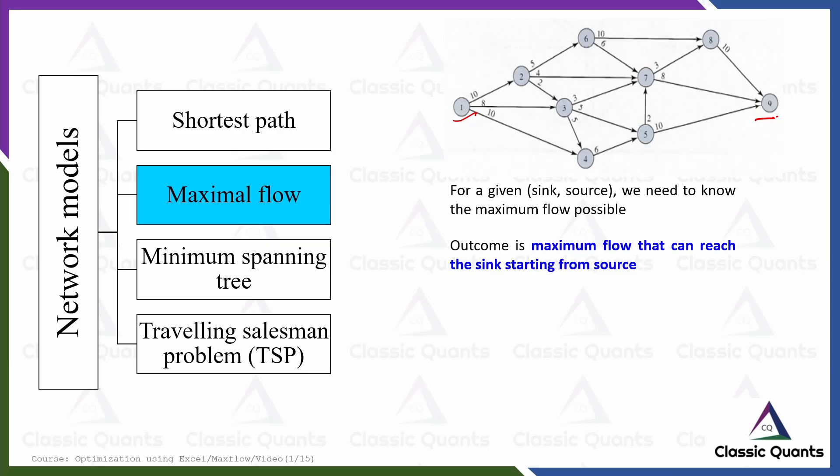If you look at this diagram, you find numbers on the edges. These numbers are the flow capacities. For example, any flow occurring from node 2 to node 6 is limited by an upper bound of 5, meaning the flow should not exceed 5 — it should be less than or equal to 5.